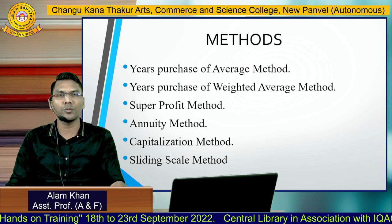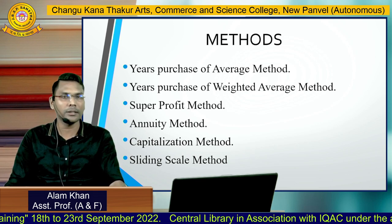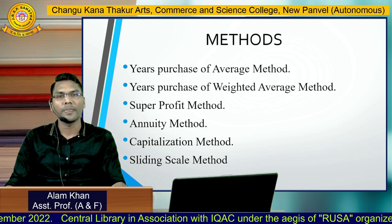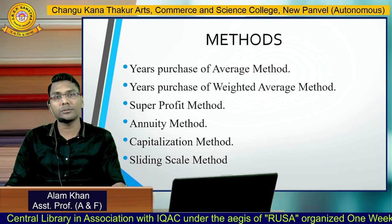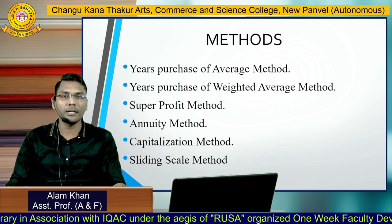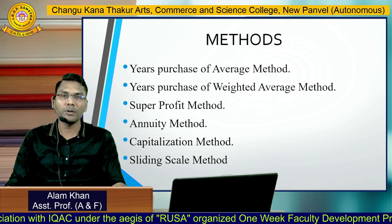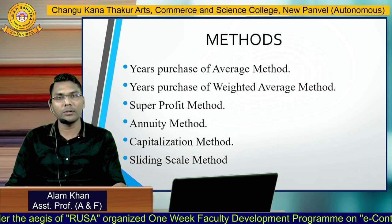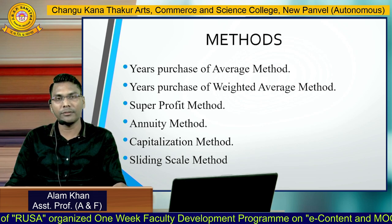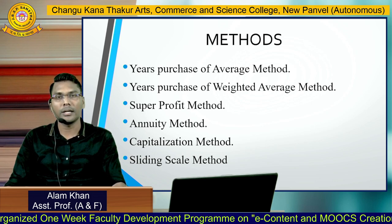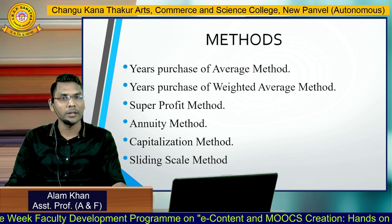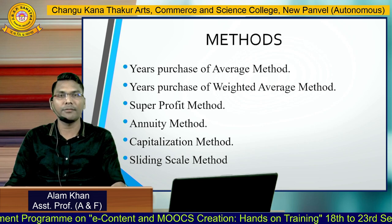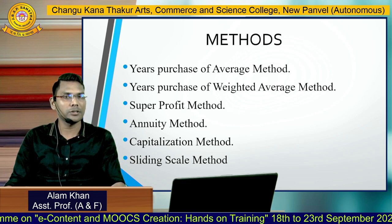The third method is super profit, which is very important. In the super profit method there are five steps. Step one: calculate average profit. Step two: calculate capital employed. Step three: calculate normal profit. Step four: calculate super profit, which is the difference between average profit and normal profit. Step five: multiply the super profit by the years of purchase.